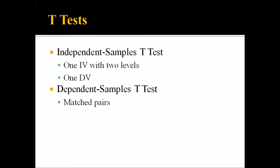A dependent samples t-test is different — it uses matched pairs, so it's a within-subjects design. Say that you had 30 participants and you administered a pretest, then a certain treatment was administered, and then you administered a post-test identical to the pretest. It would be the same dependent variable administered two times. In that situation, you would use a dependent samples t-test.